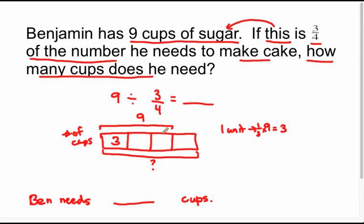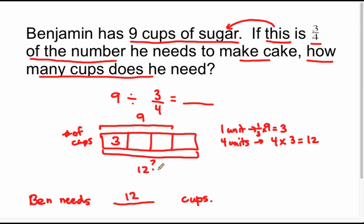I don't want to find just one unit. My question is asking me to find all four units — the whole number of cups that are needed. So four units are going to be four copies of three, which is four times three, which is equal to 12. Therefore, Ben needs 12 cups. That's what he needs — he needs 12 cups.